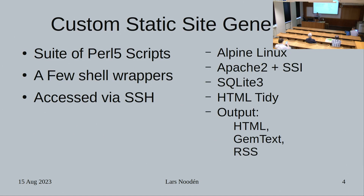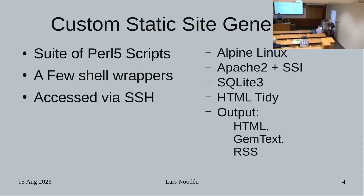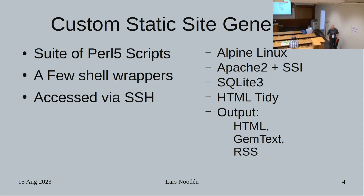The custom static site generator is a suite of five Perl scripts with a few shell wrappers, accessed via SSH. It needed just a simple interface for a simple task. It's running on Alpine Linux with Apache 2 and SQLite 3, with HTML Tidy and nano included. The output formats are HTML, GemText, and RSS. Server-side includes are used for standardized headers, footers, and menus.